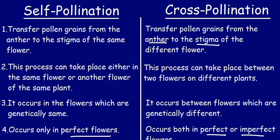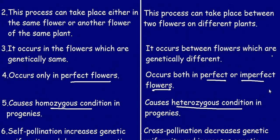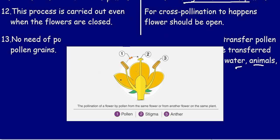Now let's look at a diagram which shows these two pollination techniques in detail. In the self-pollination diagram, the pollen grains are being transferred from the anther to the stigma of the same flower, which is why it is known as self-pollination.